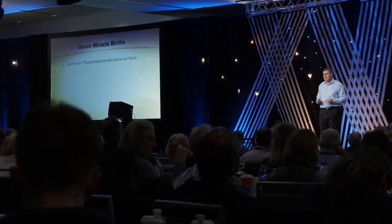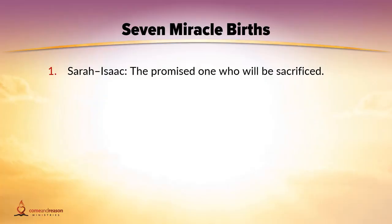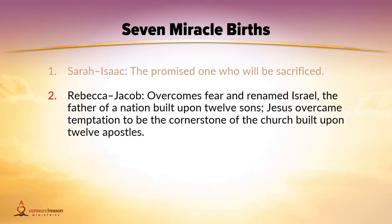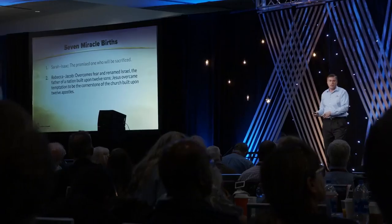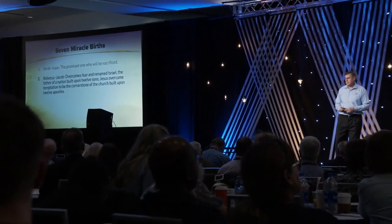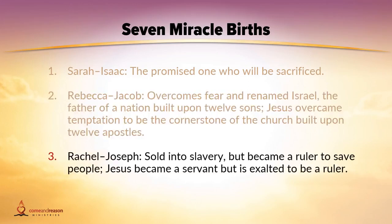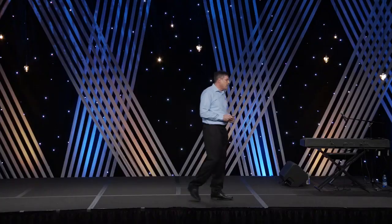There are seven miracle births recorded in Scripture - not virgin births, but women who had fertility problems and God healed them. All seven are historically real, but they also teach a larger lesson as object lessons for the coming Messiah. Sarah had Isaac, the promised child - a metaphor for the promised one, Jesus. Rebecca had Jacob, who overcomes fear and is renamed Israel - one who with God overcomes - and becomes father of a nation built on 12 sons. Jesus was tempted in every way yet without sin, overcomes, and becomes the cornerstone of the church built on the 12 apostles.